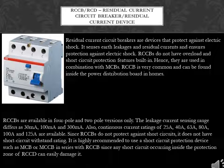The leakage current sensing range differs as 30 mA, 100 mA, and 300 mA. Continuous current ratings of 25 A, 40 A, 63 A, 80 A, 100 A, and 125 A are available. Since RCCBs do not protect against short circuits, they do not have a short circuit withstand rating. It is highly recommended to use a short circuit protection device such as an MCB or MCCB in series with an RCCB, since any short circuit occurring inside the protection zone of the RCCB can easily damage it.